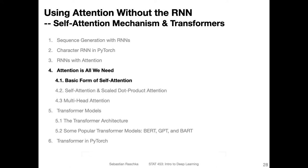In the previous video, we talked about recurrent neural networks with attention. This attention mechanism helps RNNs deal better with long sequences. Now we're doing something crazy and removing the recurrent neural network part. We're going to look at a model that just uses attention without the RNN part. This particular type of attention is also called self-attention, and it's the foundation behind the so-called transformer networks.